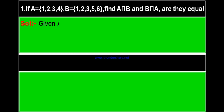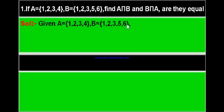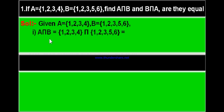Look at the solution here. We have been given two sets A and B. A is equal to set {1, 2, 3, 4} and B is equal to set {1, 2, 3, 5, 6}. Now we have to find A intersection B. A intersection B means you write set A, then the intersection symbol, then write set B. Since it is intersection, you have to write only the common elements from both sets.